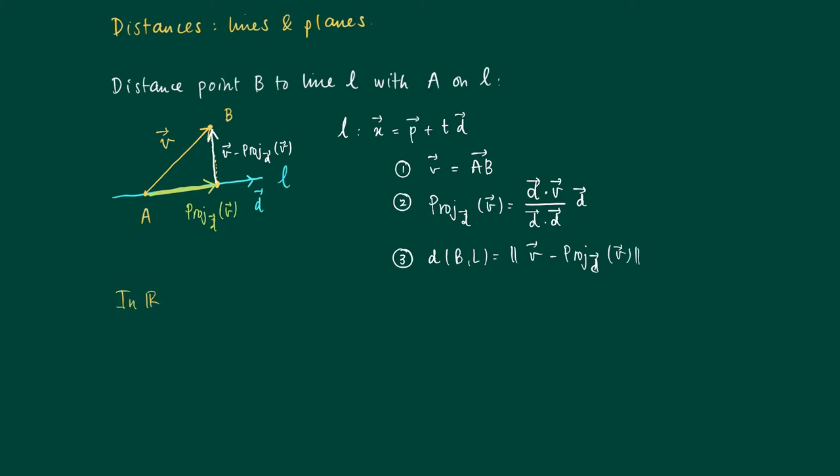In R2, if we have a line, the general equation of a line L is all vectors (X, Y) such that A times X plus B times Y is C. Then we can do something different because if we are given a point A on L and we are given a point B (X zero, Y zero).